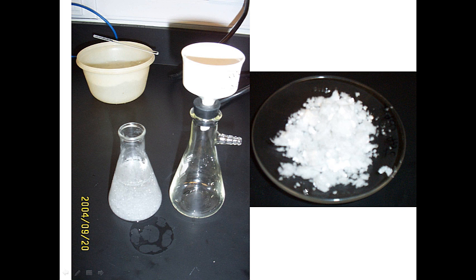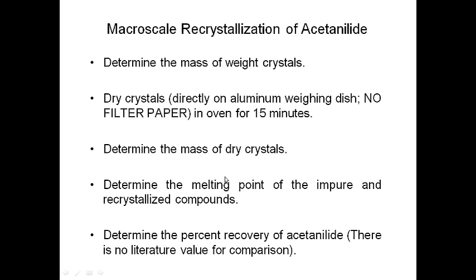So that's what we're going to do for experiment four: determine the recrystallization solvent and then perform the macroscale recrystallization. Determine the mass of the wet crystals, dry them directly on the aluminum weighing dish or watch glass — don't leave them on filter paper because they'll melt into it. Determine the mass of the dry crystals, take the melting points of both the impure and recrystallized material, and then calculate the percent recovery of the acetanilide from the initial five grams. Since we know there are impurities, you could never get 100%.